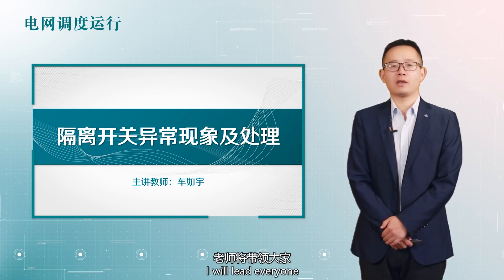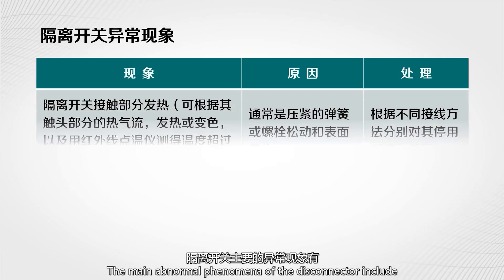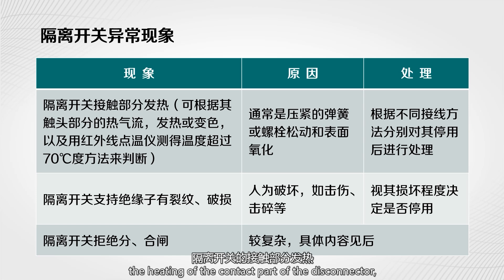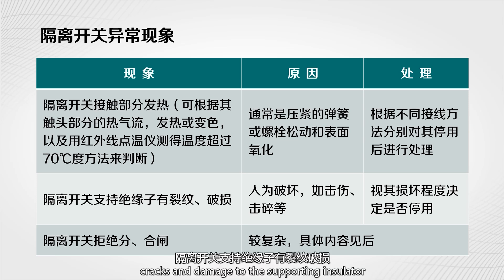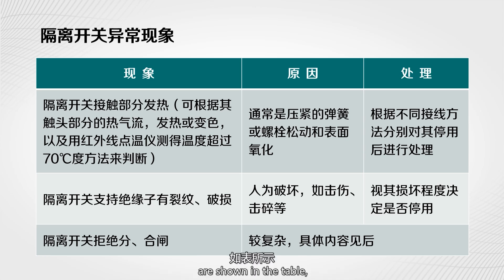In this lesson, I will lead everyone to learn about the abnormal phenomena of disconnectors and their relevant handling. The main abnormal phenomena include heating of the contact part, cracks and damage to the supporting insulator, and failure of the disconnector to open or close. The reasons and corresponding solutions are shown in the table, which we will discuss in detail later.